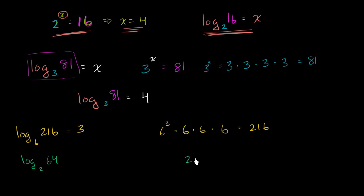So 2 to the first power is 2. 2 to the second power is 4. 8, 16, 32, 64. So this right over here is 2 to the sixth power. So when you evaluate this expression, you say, what power would I have to raise 2 to to get to 64? Well, I have to raise it to the sixth power.